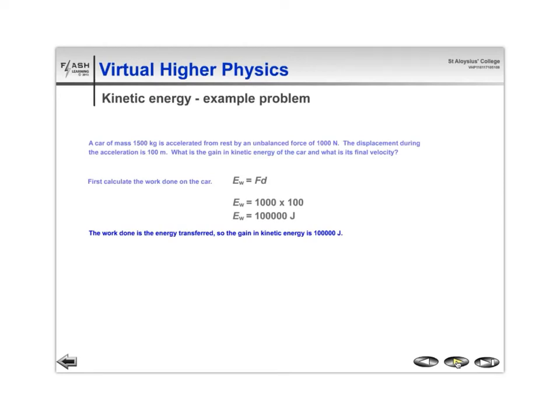And then once we know that, we can use that to calculate the final velocity. So if we now use our formula Ek equals a half mv squared, then we can substitute our values in there and rearrange. Now remember we're working out v squared first of all, and then we're taking the square root to get the answer for v.